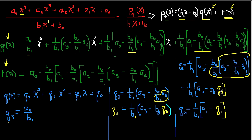And doing the same for q₀, I notice that q₀ = (1/b₁)·(a₁ − b₀·q₁). So an interesting pattern is emerging here, relating successive coefficients in the quotient polynomial.